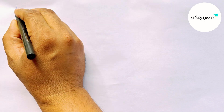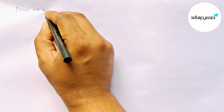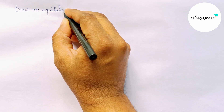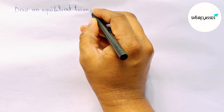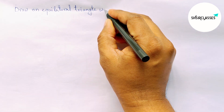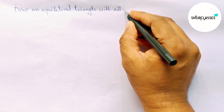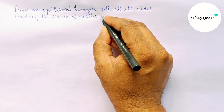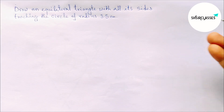Hi everyone, welcome to essay share classes. Today in this video we will draw an equilateral triangle with all its sides touching the circle of radius 3.5 centimeters in an easy way. Please watch the video till the end. Let's start.